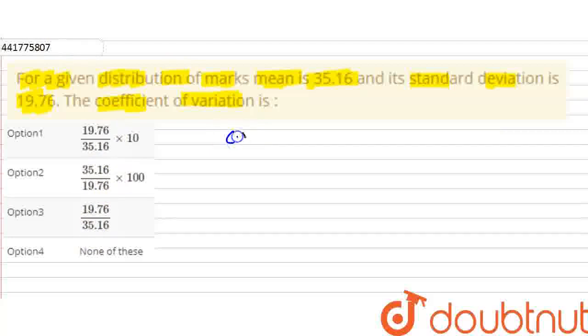So the coefficient of variation is standard deviation divided by mean into 100. This is the coefficient of variation formula.